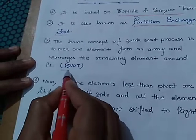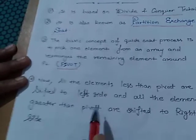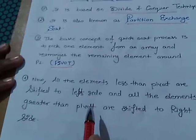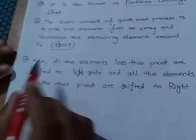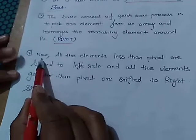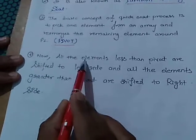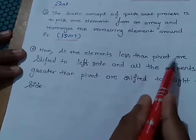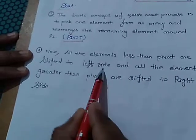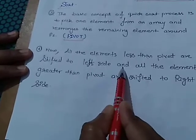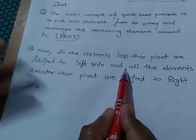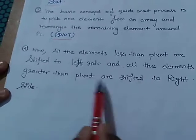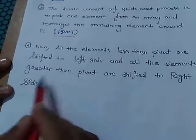As I have previously told you, we have to choose a pivot element which is known as the root element. Point number four: now all the elements less than pivot are shifted to left side and all the elements greater than pivot are shifted to right side.